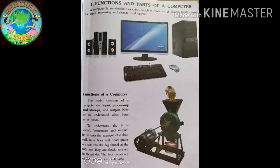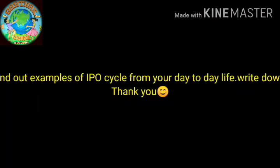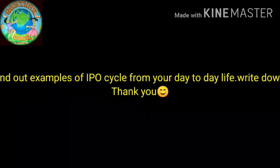Now let us see this picture. You can see a flour mill here. Food grains are the input, crushing is the process, and finally we get flour — that is the output. I hope you understand the IPO cycle. Homework is given on the screen. Thank you very much.